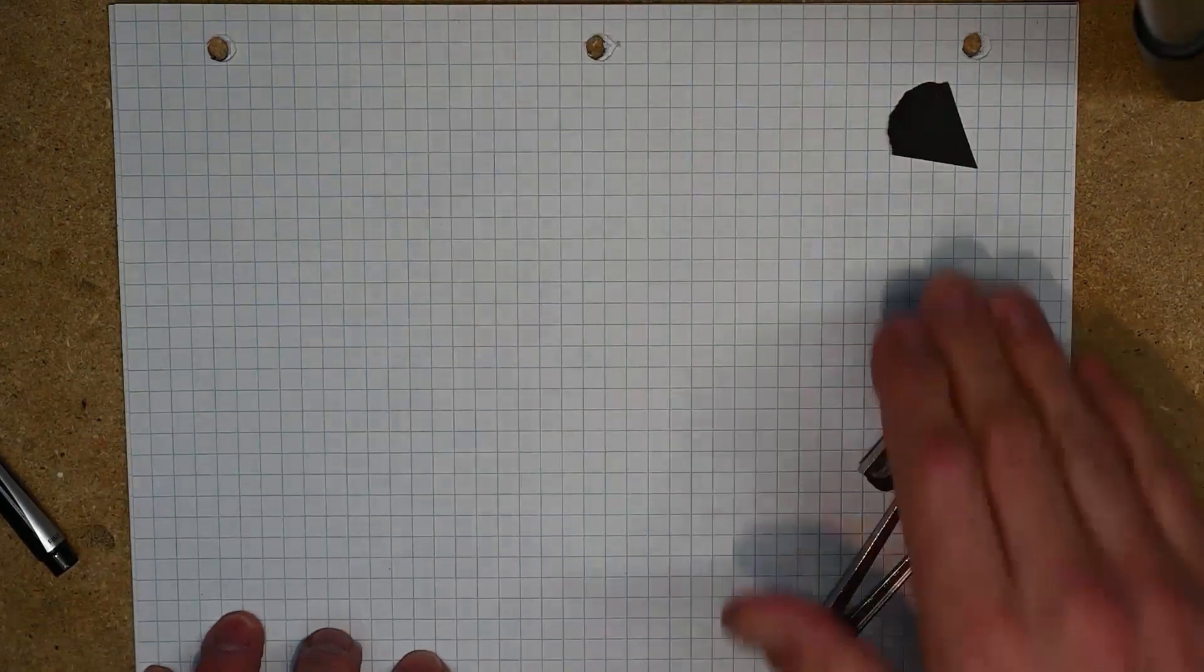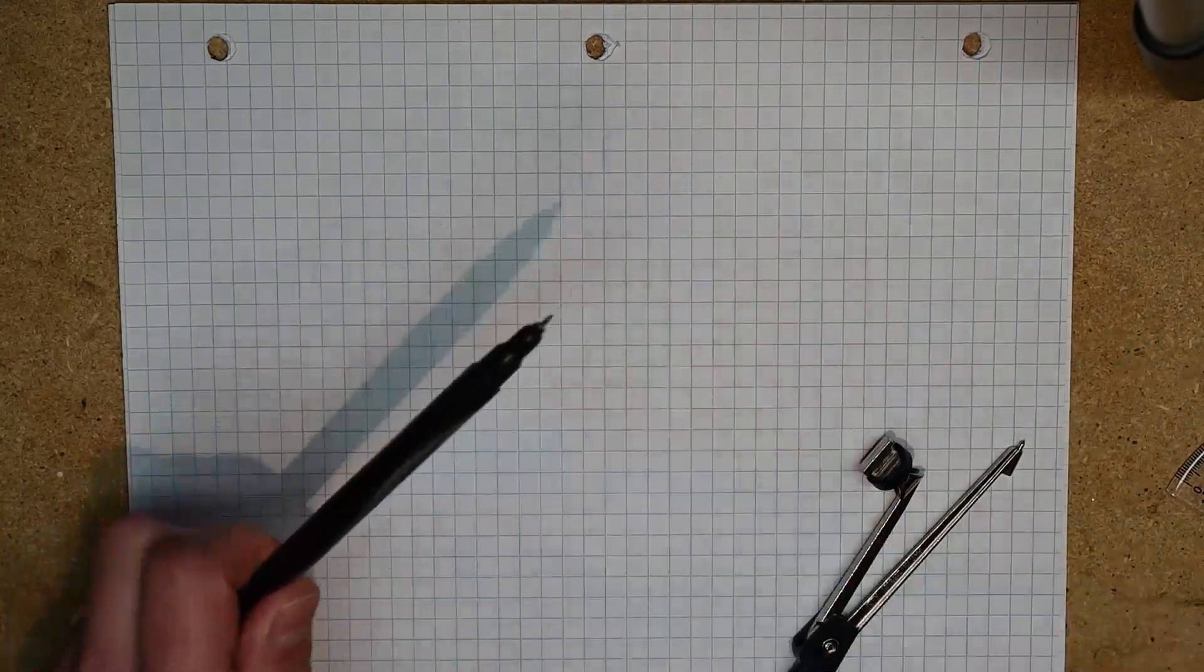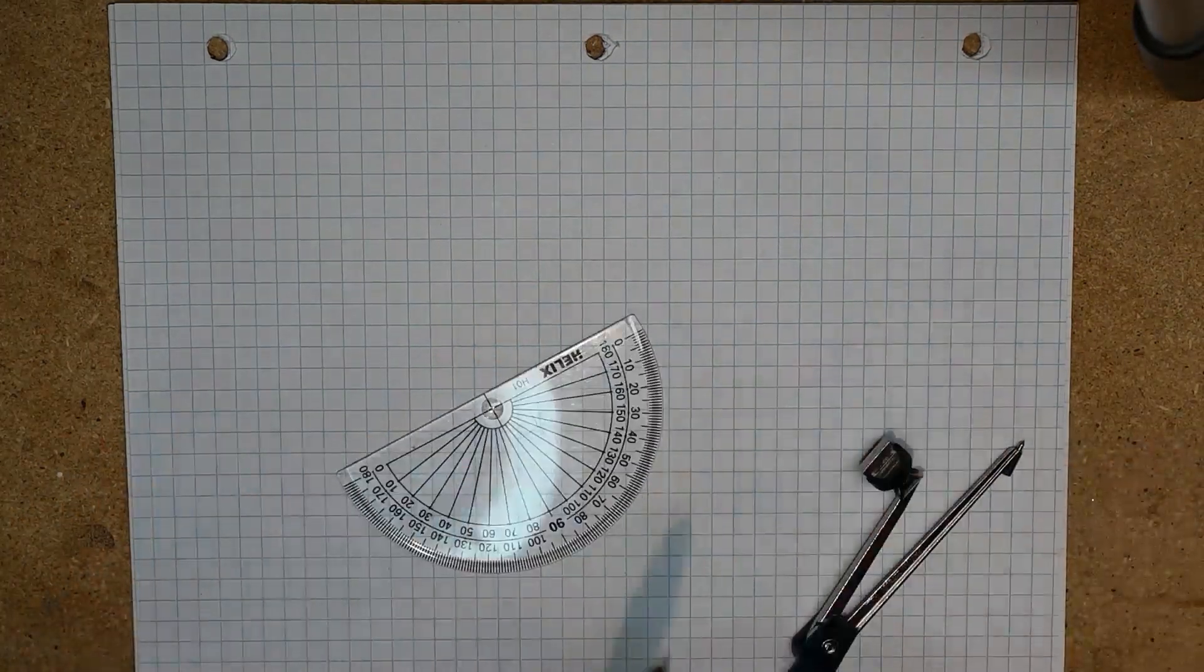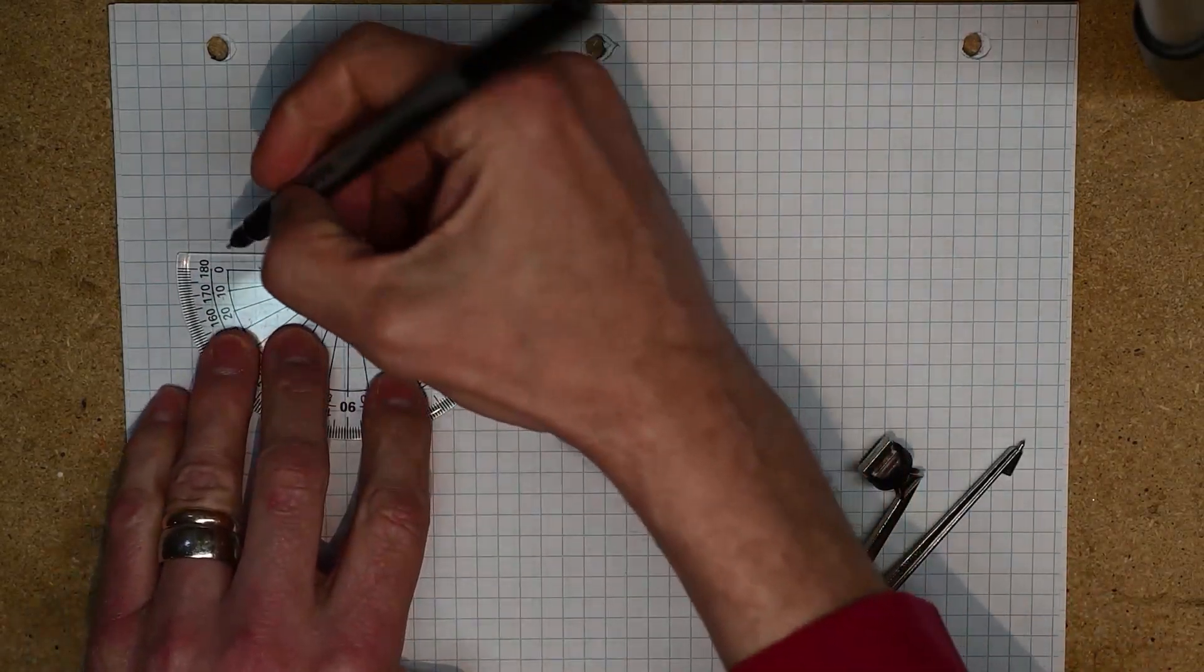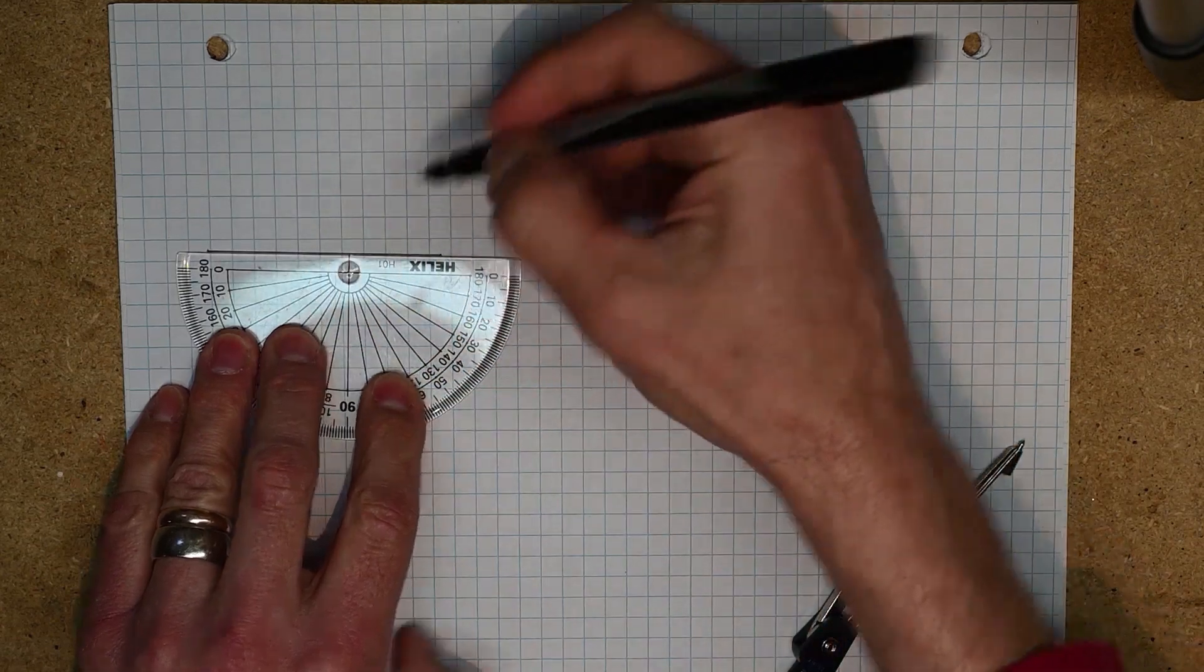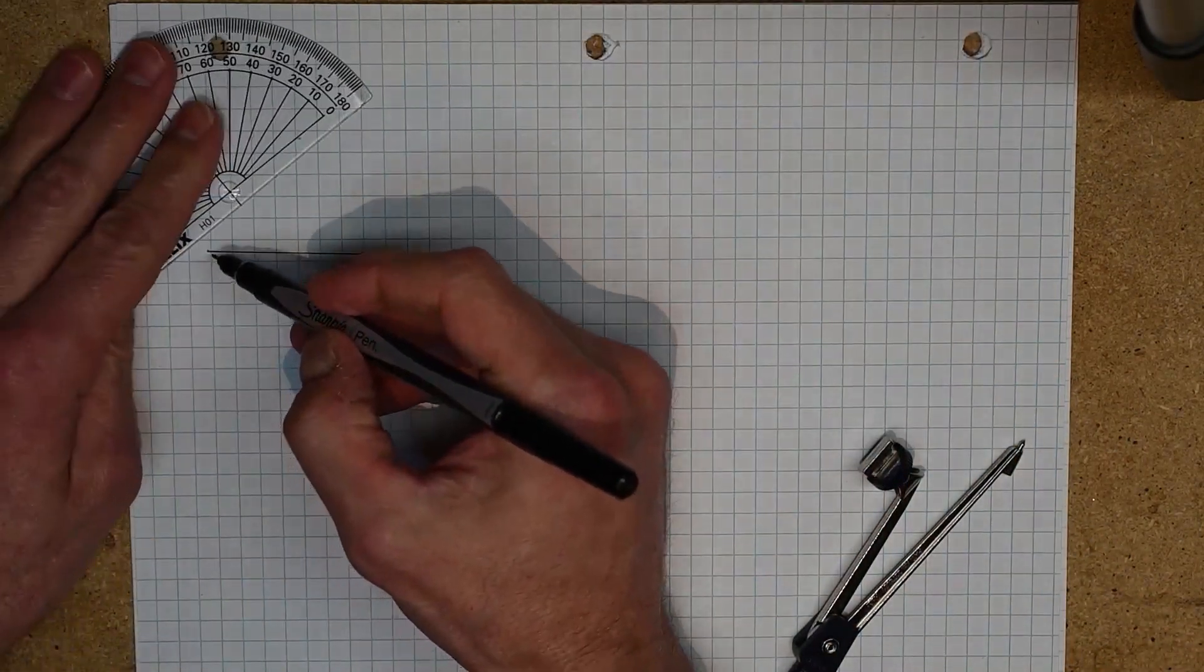So the next thing we're going to look at now is how do we measure angles. To get that job done, I'm going to start by drawing one for you and then we'll measure it together. So I am going to draw an acute angle to start with. Let's just create ourselves an acute angle.